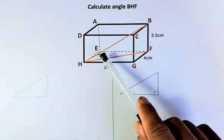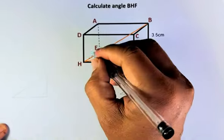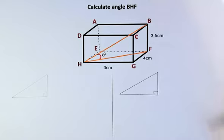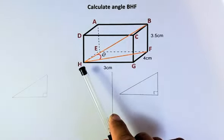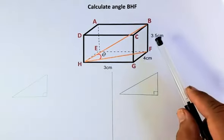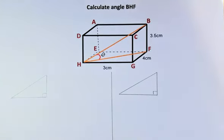We are going to find angle BHF and we are going to label that as Theta because it's easier that way. And the length of the cuboid is HG is 3cm, GF is 4cm and BF is 3.5. It is not done to scale. That's why the numbers are a bit weird.